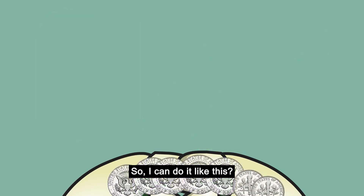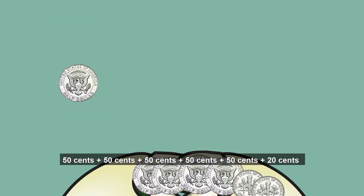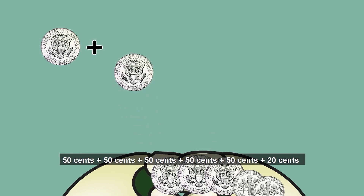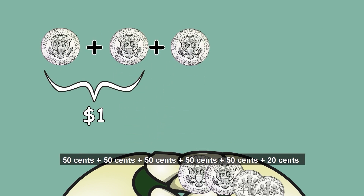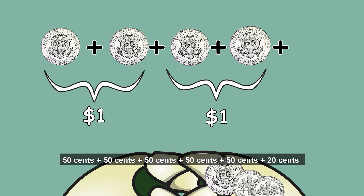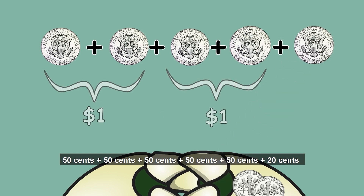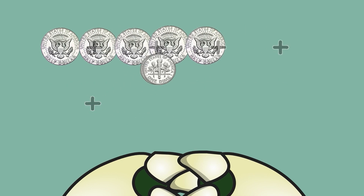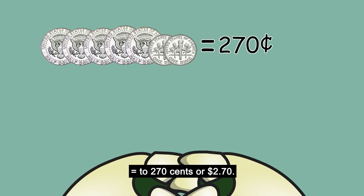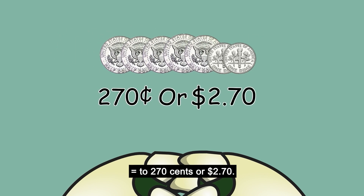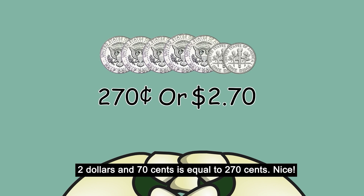So, I can do it like this. 50 cents plus 50 cents plus 50 cents plus 50 cents plus 50 cents plus 20 cents equals 270 cents, or 2 dollars 70 cents. 2 dollars and 70 cents is equal to 270 cents.